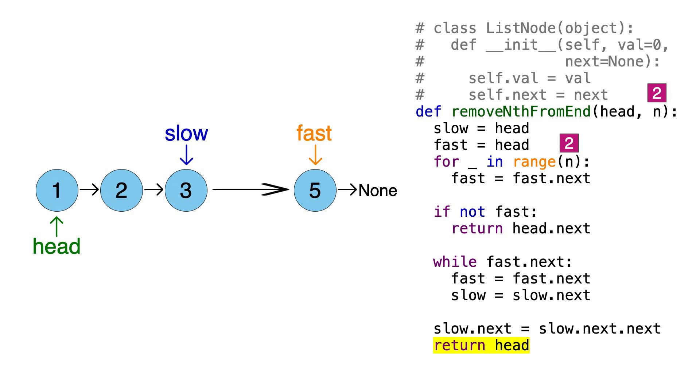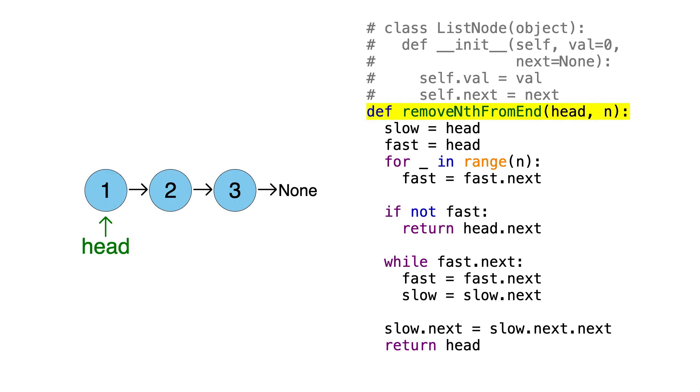Now let's look at an edge case where n is equal to the length of the list. Let's say this is the linked list, which consists of 3 nodes, and n is also equal to 3. The third node from the end is node 1, so this means we need to delete the head node.